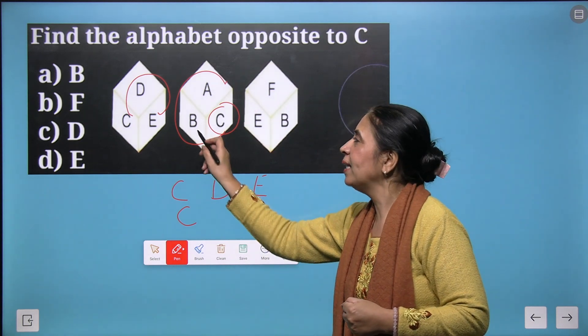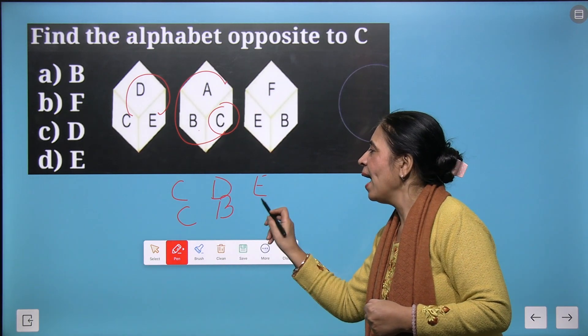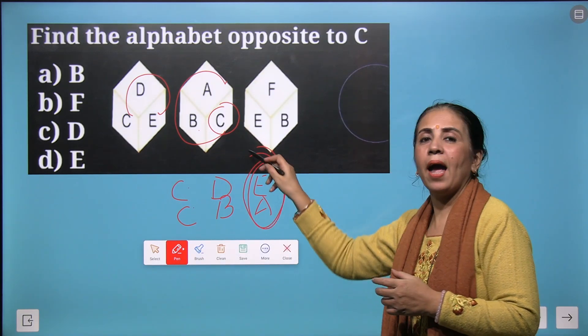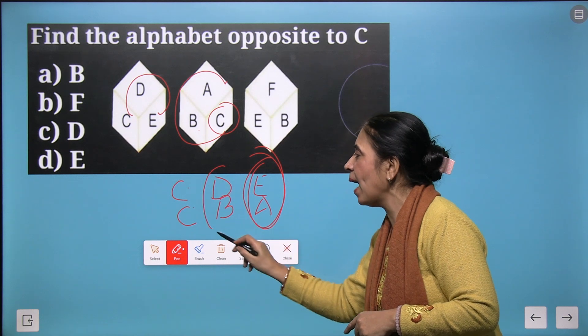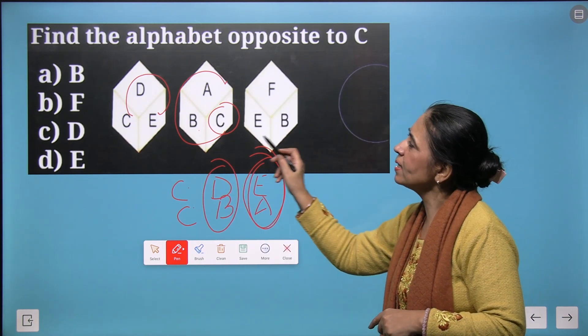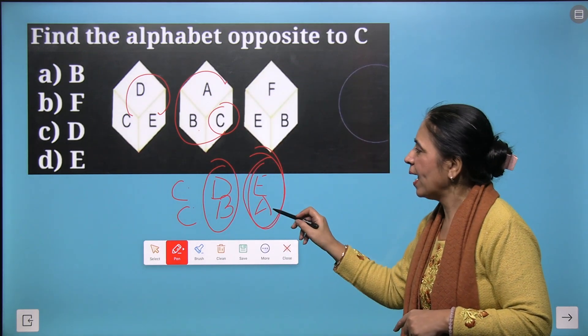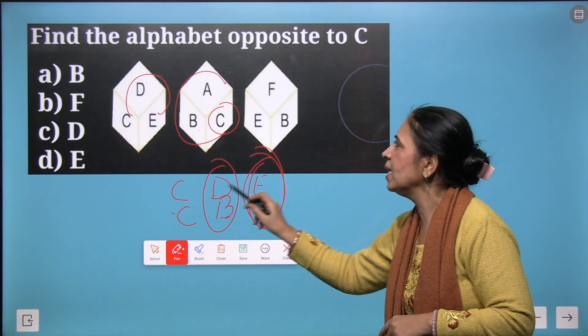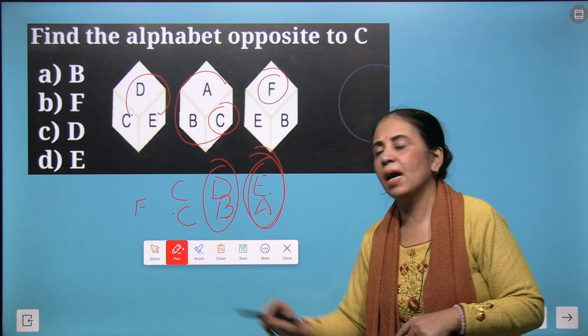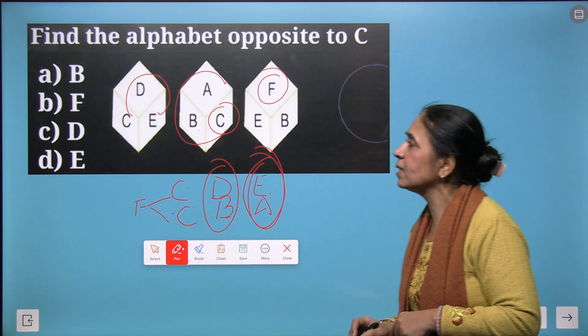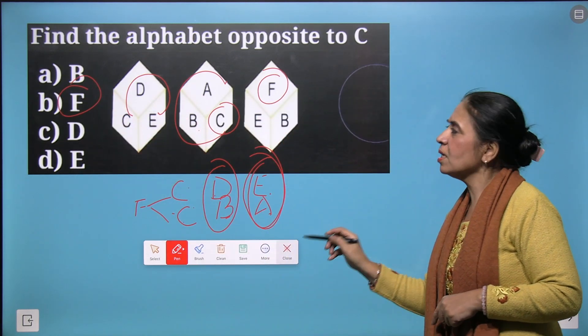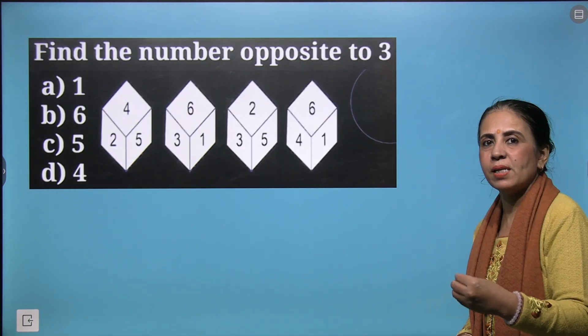So we analyze E and A are opposite sides. B and D are opposite sides and what is left here? We say A, B, C, D, E and F. So F and C are the opposite sides and we get the answer F. So this is how we solve the questions with 3 dice.